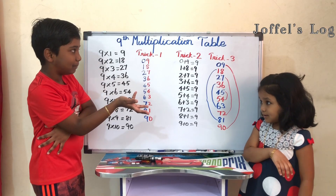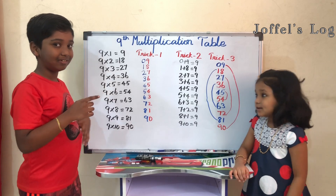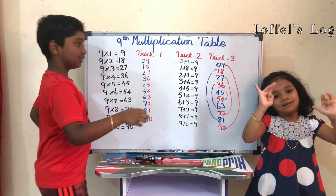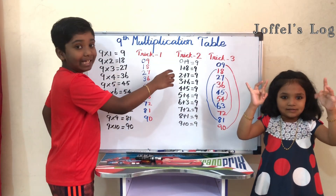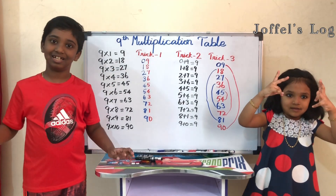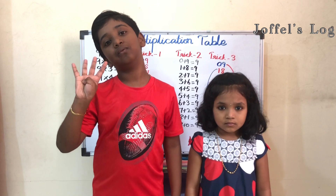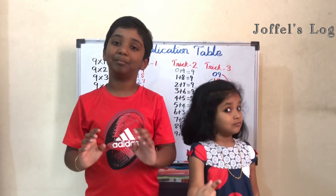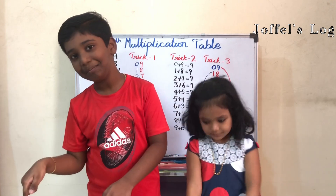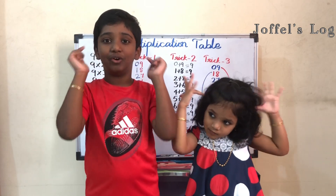Did you understand the multiplication table of nine? Yes, I feel now you understand the tricks also. I am so glad that my little sister learned the finger multiplication trick, the switching multiplication trick, the adding multiplication trick, and the line multiplication trick. I taught you four different types of tricks to remember the nine times table easily. If you like this video, click like, share, subscribe, and click the bell button to see my next video. I will meet you soon with some interesting videos. Bye-bye!